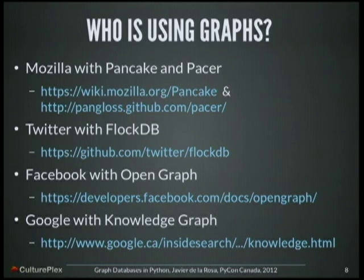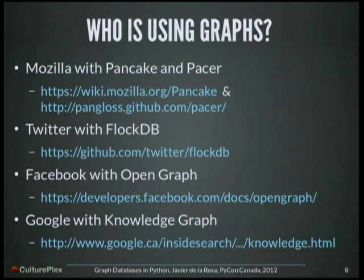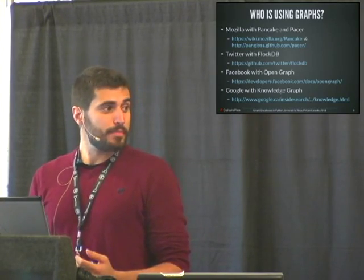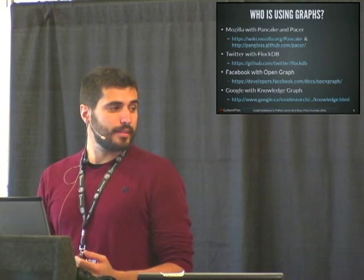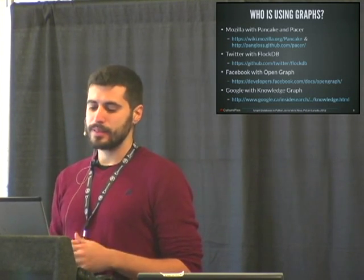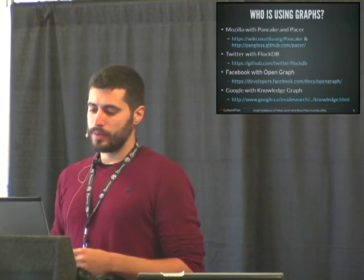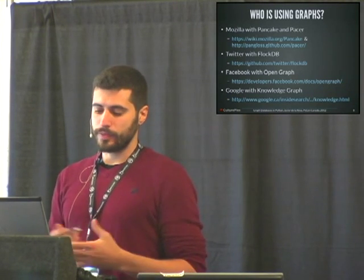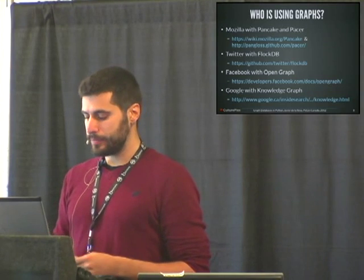But who is using graphs right now? Mozilla, for example, is working on Pancake and they are using Pacer, which is kind of a query language. Twitter also created FlockDB — FlockDB is a graph database, but it actually doesn't have a query language, so I'm not sure if it's really a graph database. Facebook is working on the open graph concept, and Google, of course, is doing the knowledge graph.